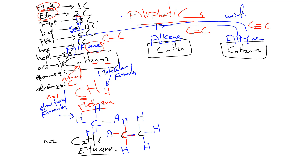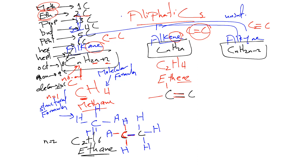For alkene with n=2, using CₙH₂ₙ: 2×2=4, so the formula is C₂H₄, called ethene — note it's ethene, not ethane. For the structural formula, at least one double bond is required, so we draw C=C. Around each carbon we have four covalent bonds; two are shared in the double bond, leaving one, two on each side for hydrogens.